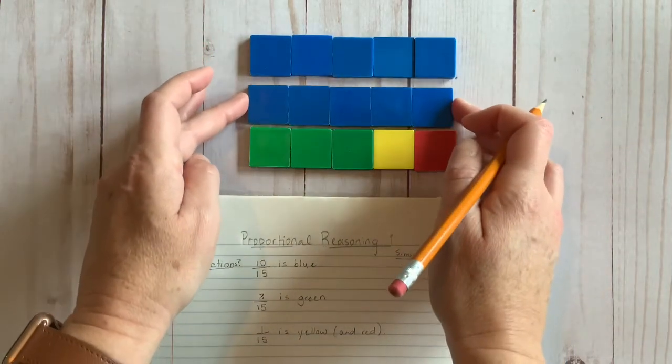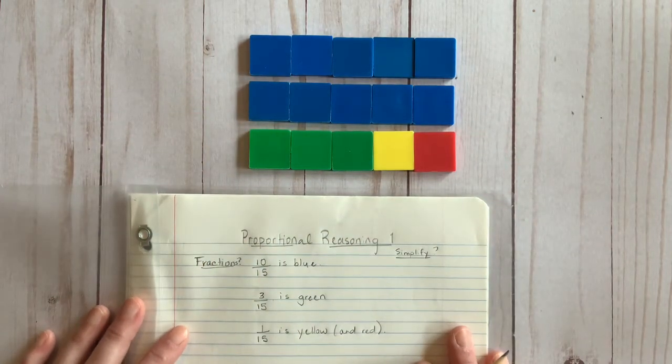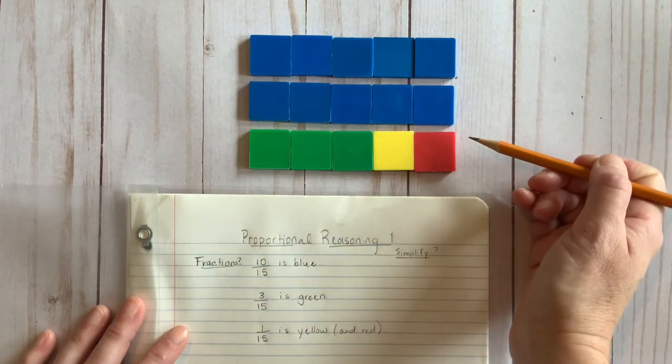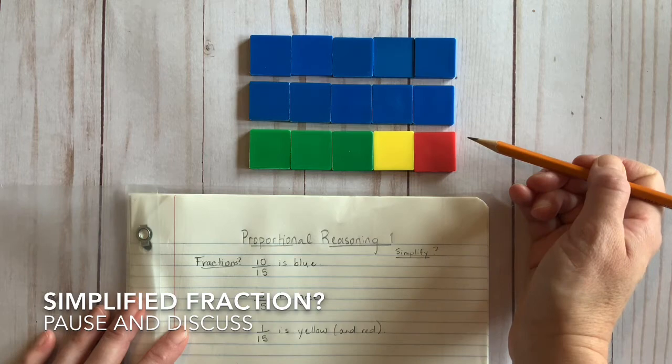There. See that? Same amount. Different groupings. Now you can say I have created three equal groups and two of them are blue. So instead of 10 fifteenths, I now have a simplified fraction. Can you tell what it is? Pause and discuss.